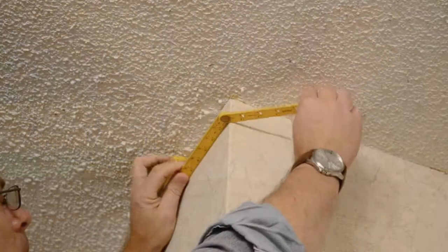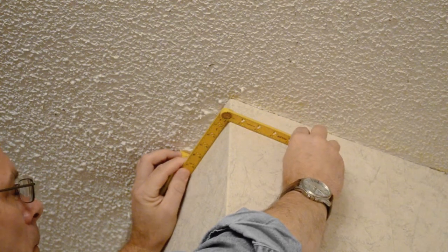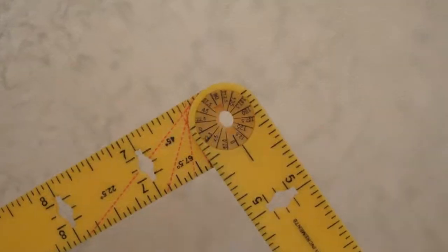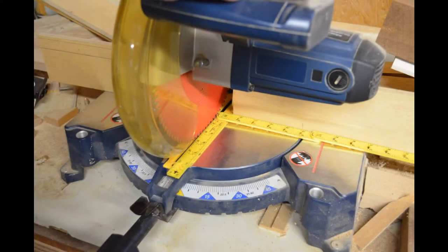The Uni-Ruler can also function as an angle gauge, allowing you to copy existing angles around the job site and then easily transfer them to your chop saw or table saw.